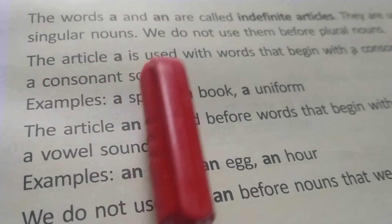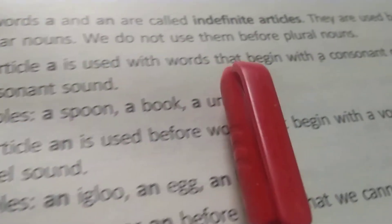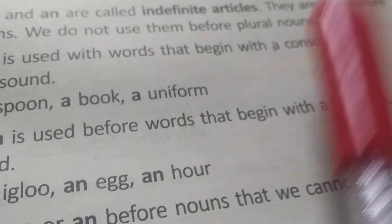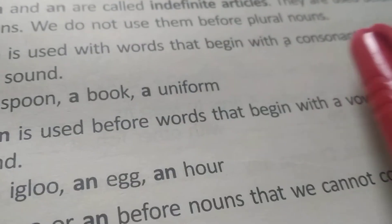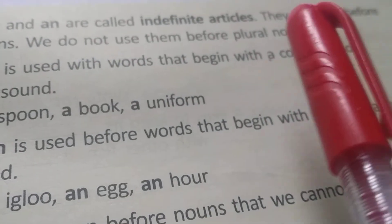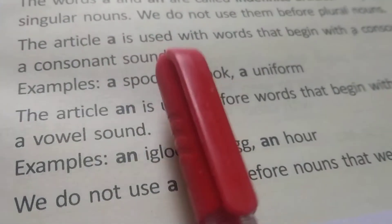The article a is used with words that begin with a consonant sound. Consonants means there are 21 consonants in English grammar. How many? 21. B, C, D, F, G, H. These are consonants. A consonant sounds.